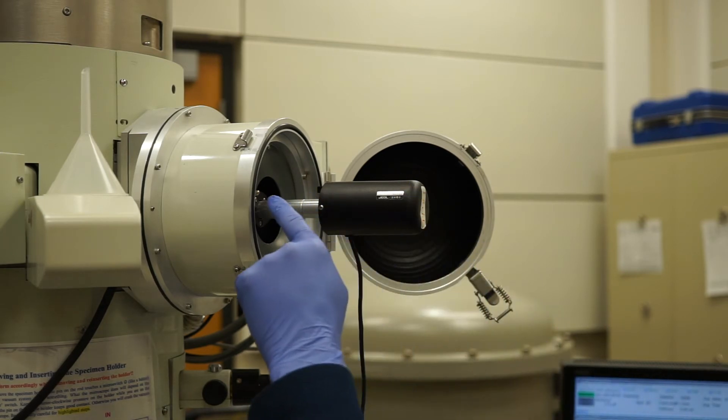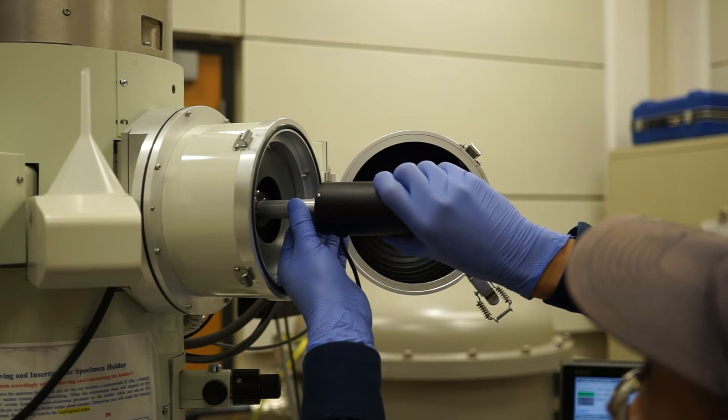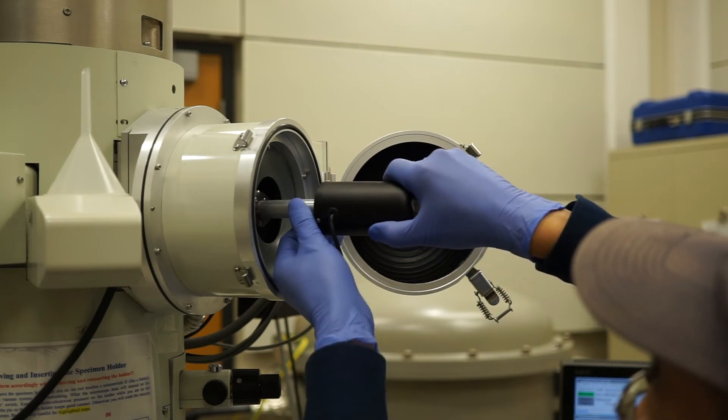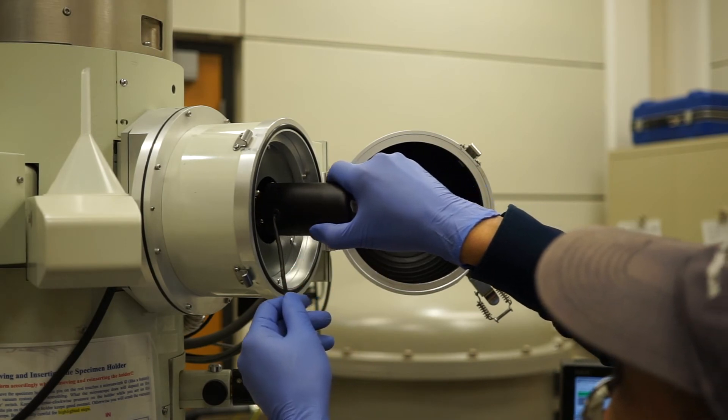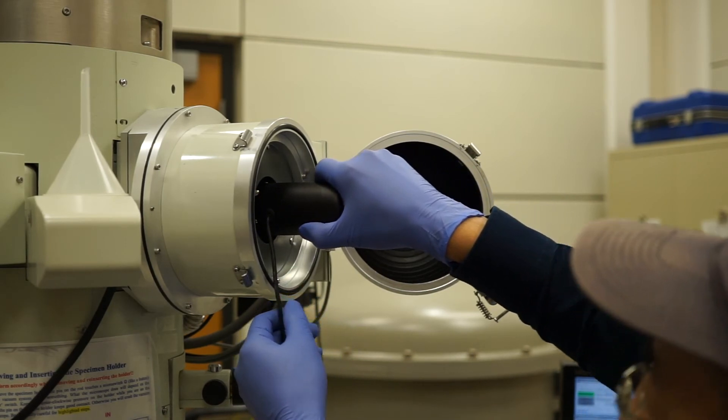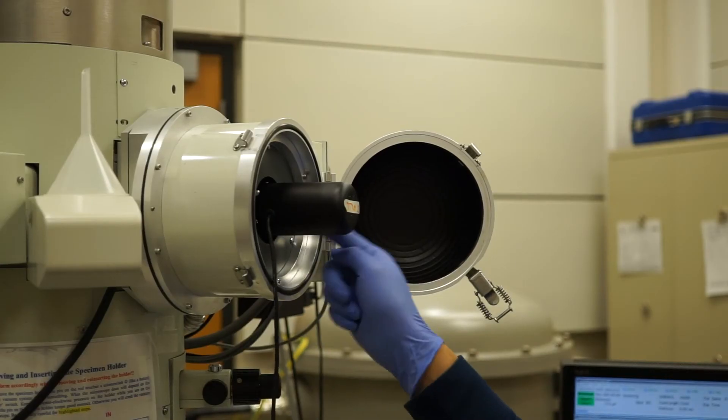After the light turns on, rotate clockwise, allow the vacuum to pull the sample holder in, rotate clockwise again, and allow the vacuum to pull again. Each time you rotate, you should feel the round pin hit a stop. When it's fully inserted, the flat pin on the handle should fit into the slot on the TEM.